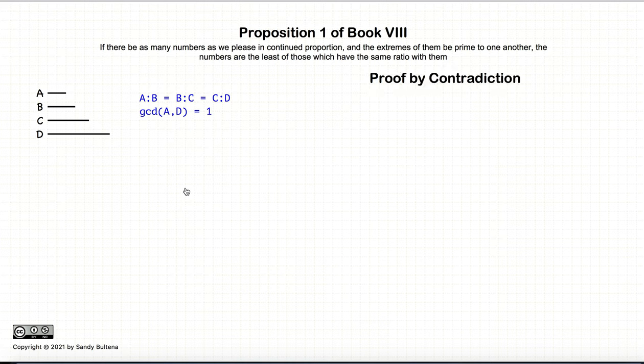So let's start the proof. Again, we're starting with A to B is B to C, which is C to D, and A and D are relatively prime.